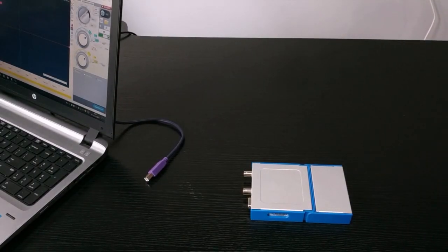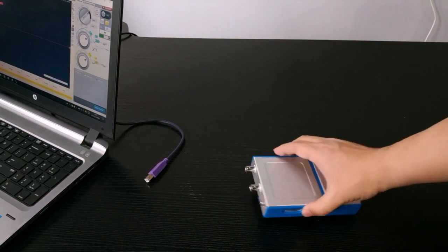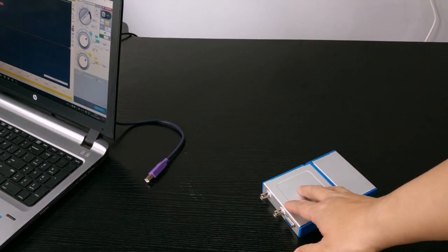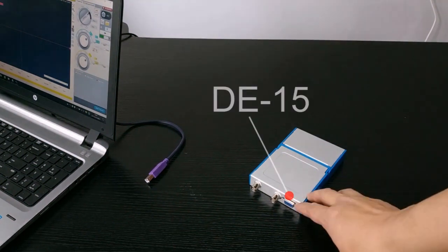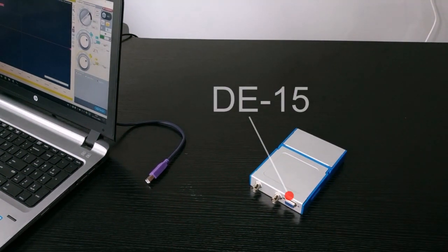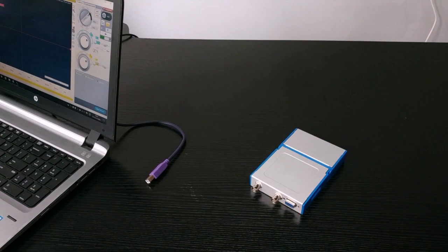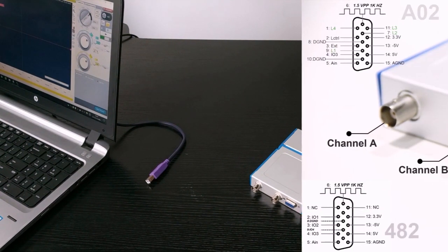Let's present the unique feature of the OSC oscilloscope to use expansion modules. Beside the two analog channels there is also a multifunctional extension port. This port is based on the DE15 connector.